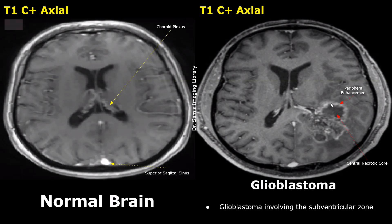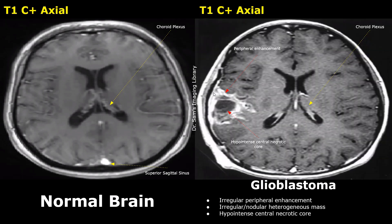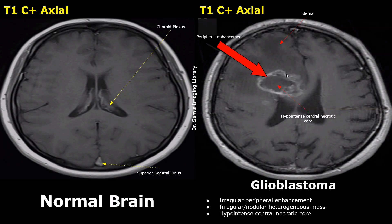Mild midline shift is also noted. In this case, the peripheral enhancement is very strong. The enhancement is irregular and surrounds a hypo-intense central necrotic core. The central core will not show enhancement because of cystic necrosis. Here is another T1 contrast enhanced image showing the typical features of glioblastoma: an irregularly shaped heterogeneous mass with peripheral enhancement and a hypo-intense central necrotic core.